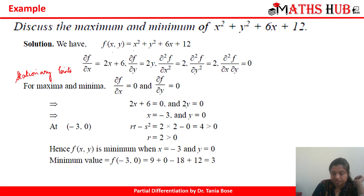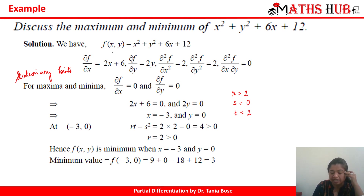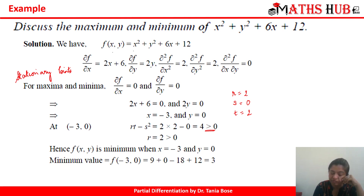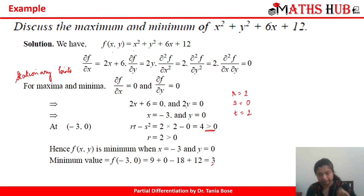So we get the stationary point as (-3, 0). Now we calculate r, s, and t: r = 2, s = 0, and t = 2. So rt - s² = 4, which is greater than 0. Since r = 2 is also greater than 0, the point (-3, 0) is a point of minimum. The minimum value is obtained by substituting x = -3 and y = 0 into the function, giving the answer as 3.